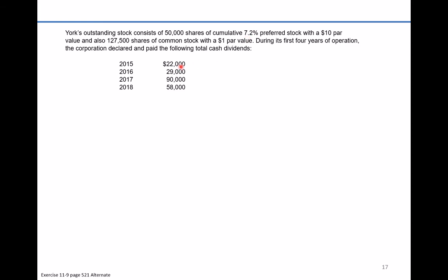In 2015, only $22,000 in dividends was made available. Preferred shareholders have preference to dividends and are entitled to $36,000, but only $22,000 was paid out — so all of it goes to the preferred shareholders. Were preferred shareholders made whole? No, they are short $14,000, and that amount becomes dividends in arrears.